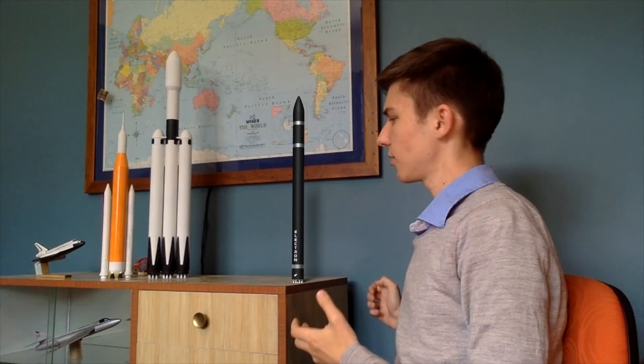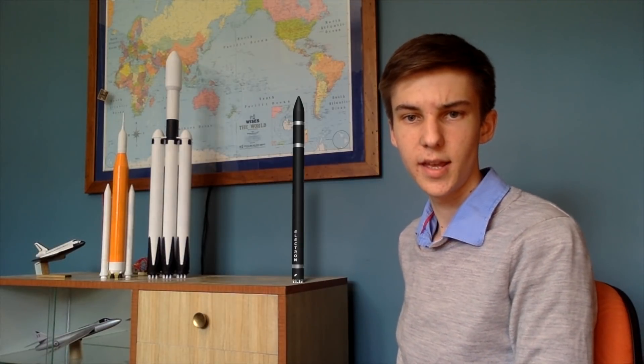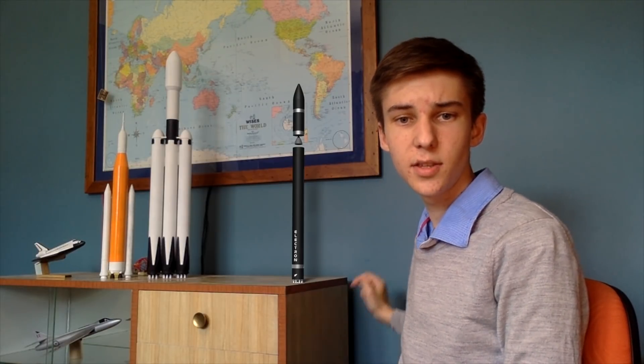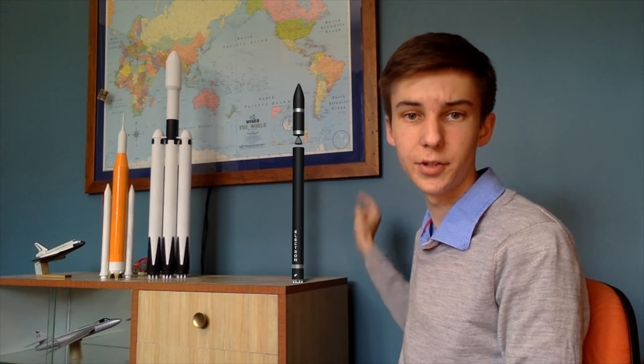So we have to consider the air pressure around the rocket when it's firing. You'll notice on the Rocket Lab Electron rocket here, it's got nine Rutherford engines on the bottom, but only one engine on the top stage. That's because the nozzles of the engines on the bottom stage are much smaller than on the top stage. The reason for this is that the size of the nozzle affects how much that exhaust gas gets expanded.